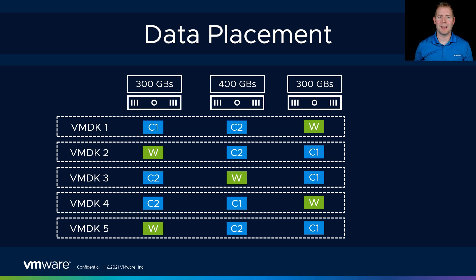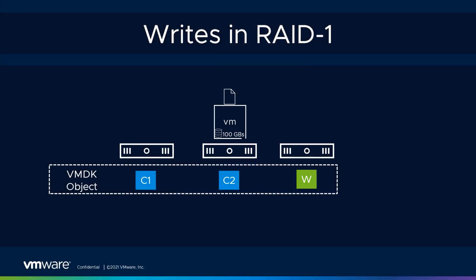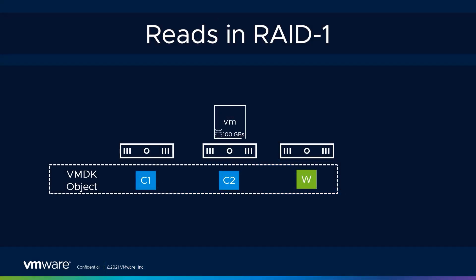To wrap up this video: we started by talking about failures to tolerate — FTT — and how RAID 1 supports an FTT of 1, 2, and 3. We then switched gears and talked about writes and how we write to all components simultaneously in a mirroring environment. We finished up by discussing reads — how we read data from a local component if our VM is on that same host, or how we read across the network. I hope you found this video informative. Thank you for watching.